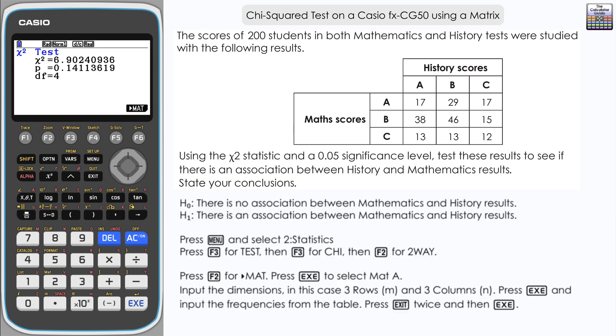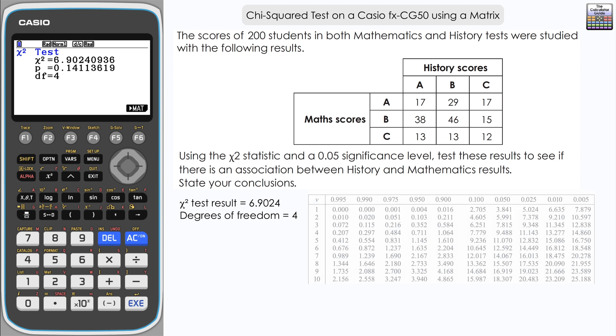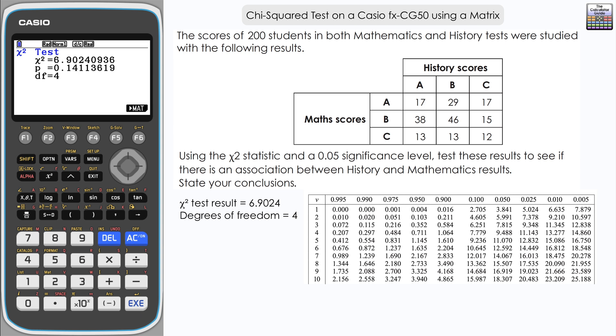We need to discover if that is significant or not and then make a conclusion based on our hypotheses. From the percentage points of the chi-squared distribution table, we need to find out what the critical value is.